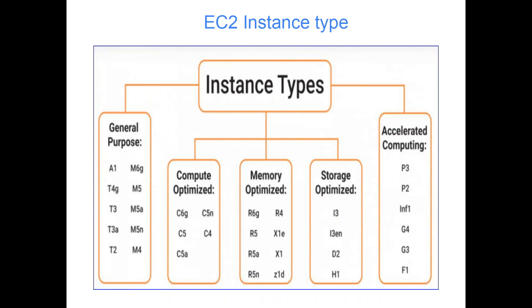When you are creating an EC2 instance, there are many types of instances available — it depends completely on your requirement. The major types are: General Purpose. When you don't know exactly what your requirement is, or maybe at the beginning of a project you don't know what the data size will be — whether it will be more towards storage, memory, or computation — in that case you can go with General Purpose EC2 instances.